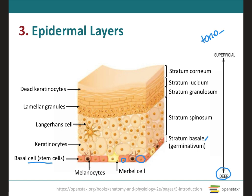These keratin intermediate filaments will also attach to desmosomes, which are cell junctions that bind the cells of the stratum basale to each other within the same layer and also to adjacent cells in the layer above, which is the stratum spinosum. In addition, these tonofilaments are going to bind to hemidesmosomes, which bind the keratinocytes to the basement membrane positioned between the epidermis and the dermis.